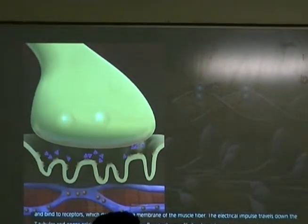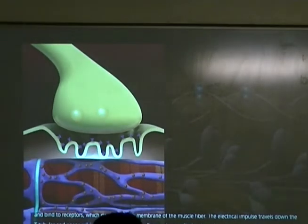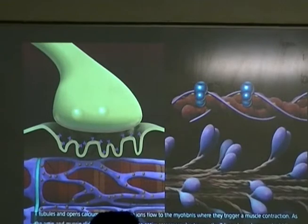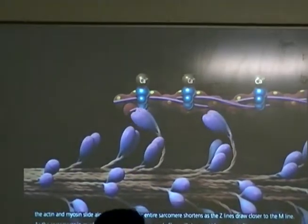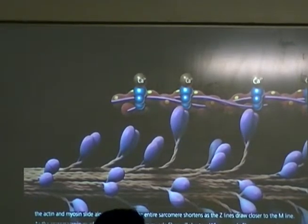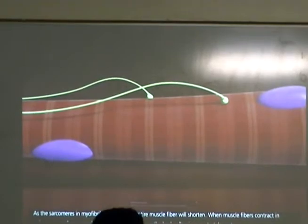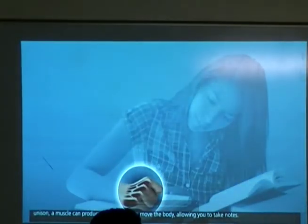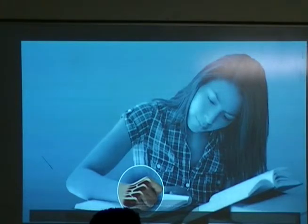Muscle contractions are controlled by calcium. The thin actin filaments are associated with regulatory proteins troponin and tropomyosin. When a muscle is relaxed, tropomyosin blocks the cross-bridge binding sites on actin. When calcium ion levels are high enough and ATP is present, calcium ions bind to troponin, which displaces tropomyosin, exposing the myosin binding sites. Calcium is stored in the sarcoplasmic reticulum and released in response to signals from the nervous system. The electrical impulse travels down the T-tubules, opening calcium stores. Calcium ions flow to the myofibrils triggering contraction; sarcomeres shorten as Z-lines draw closer to the M-line, and when muscle fibers contract in unison a muscle produces enough force to move the body.